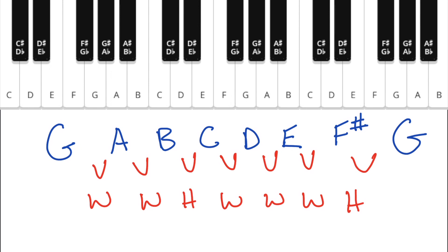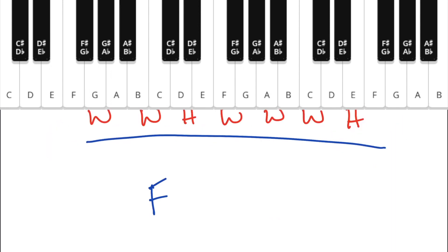So accidentals like sharps and flats are super important because they help us maintain this whole whole half, whole whole whole half pattern. Without them we don't have major scales. Hopefully now you also understand the reason that we have enharmonics. That is where a note like F sharp means the same thing as G flat.